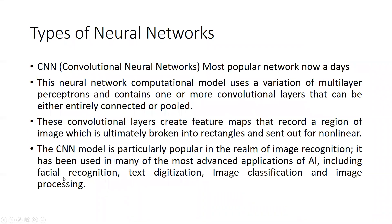The next type is the Convolutional Neural Network (CNN), the most popular network nowadays. This computational model uses a variation of multi-layer perceptrons and contains one or more convolutional layers that can be either fully connected or pooled. These convolutional layers create feature maps that record a region of an image, which is broken into rectangles for nonlinear processing. CNN is primarily used for image recognition, facial recognition, text digitization, image classification, and image processing.